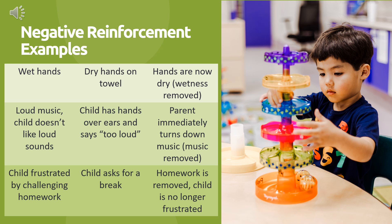Here are some examples of negative reinforcement. When we have wet hands, we dry them on a towel and the wetness is removed. If there's loud music on and a child puts their hands over their ears and says 'too loud,' and a parent immediately turns the music down, then covering the ears and saying 'too loud' is reinforced. If a child is frustrated by challenging homework and asks for a break, the homework is removed and the child is no longer frustrated. Both positive and negative reinforcement are equally effective — the key difference is that with positive reinforcement you're adding something, and with negative reinforcement you are removing something.